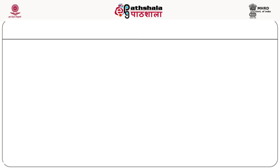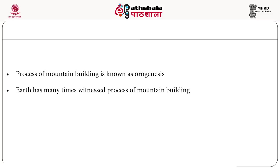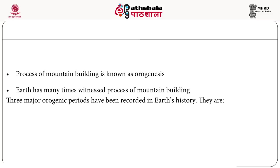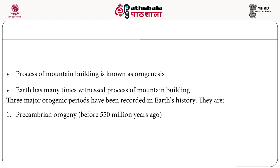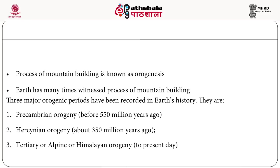The process of mountain building is known as orogenesis. Earth has many times witnessed this process. In Earth's history, three major orogenic periods have been recorded: first, Pre-Cambrian Orogeny, that is before 550 million years ago; second, Hercynian Orogeny, about 350 million years ago; and third, the Tertiary or Alpine or Himalayan Orogeny, which continues to the present day.